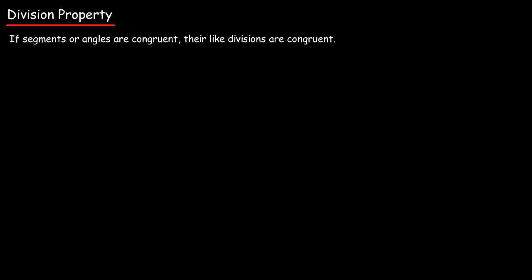Now let's move on to the division property. The division property of segments and angles is basically the reverse of the multiplication property. The basic idea is: if segments or angles are congruent, their like divisions are congruent.